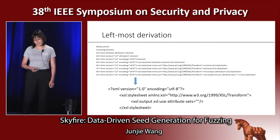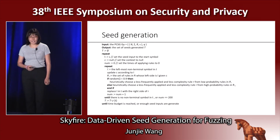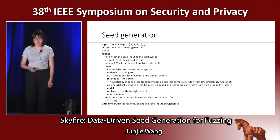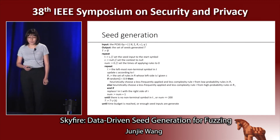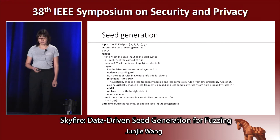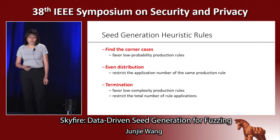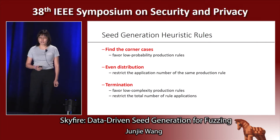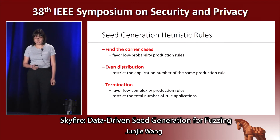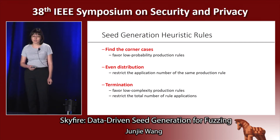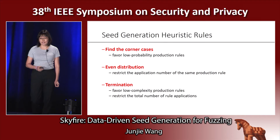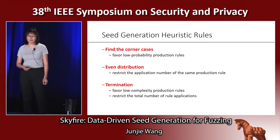Then we get a test case. Generating test cases from the context-sensitive grammar is similar to leftmost derivation, but each time we choose a production rule whose context matches the current context. To generate well-distributed test cases, we also employ heuristic rules: we favor low-probability production rules and restrict the application number of the same production rule. We also favor low-complexity production rules and restrict the total number of rule applications.